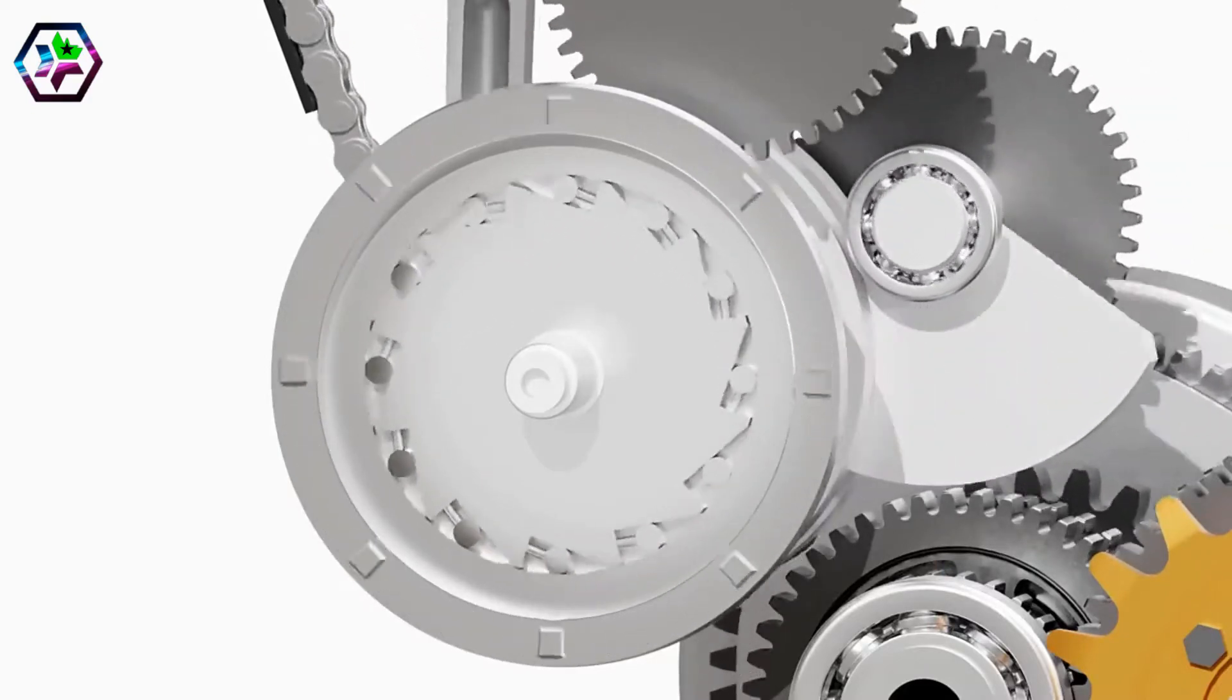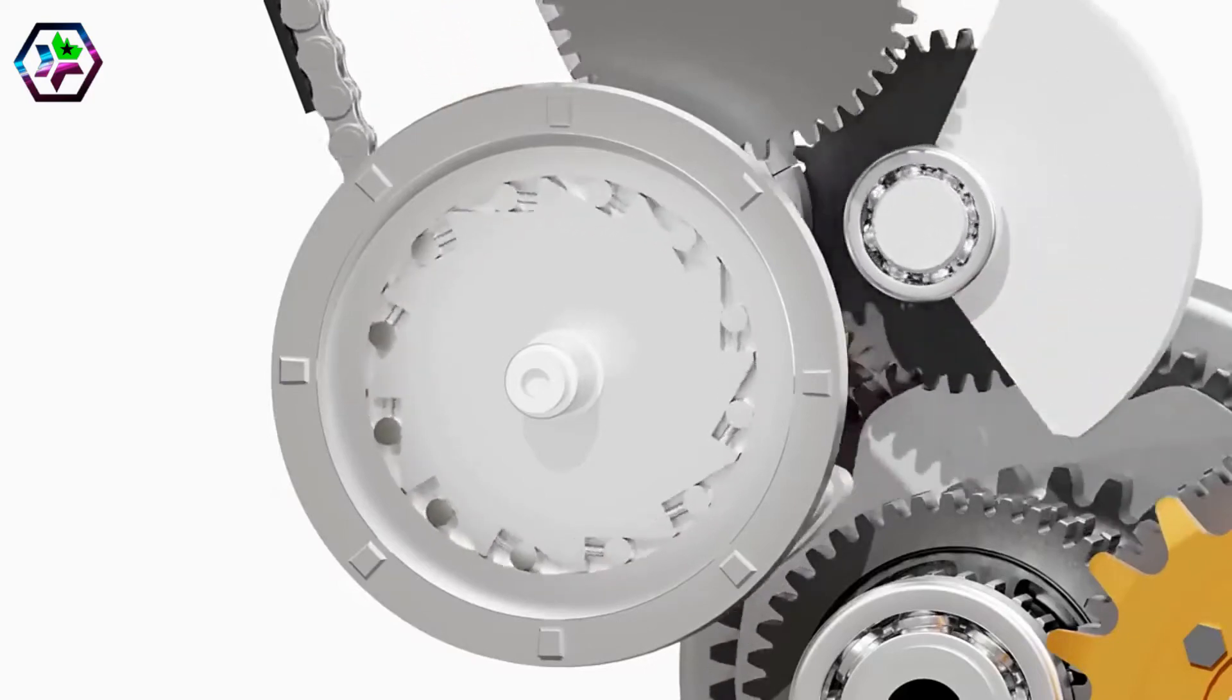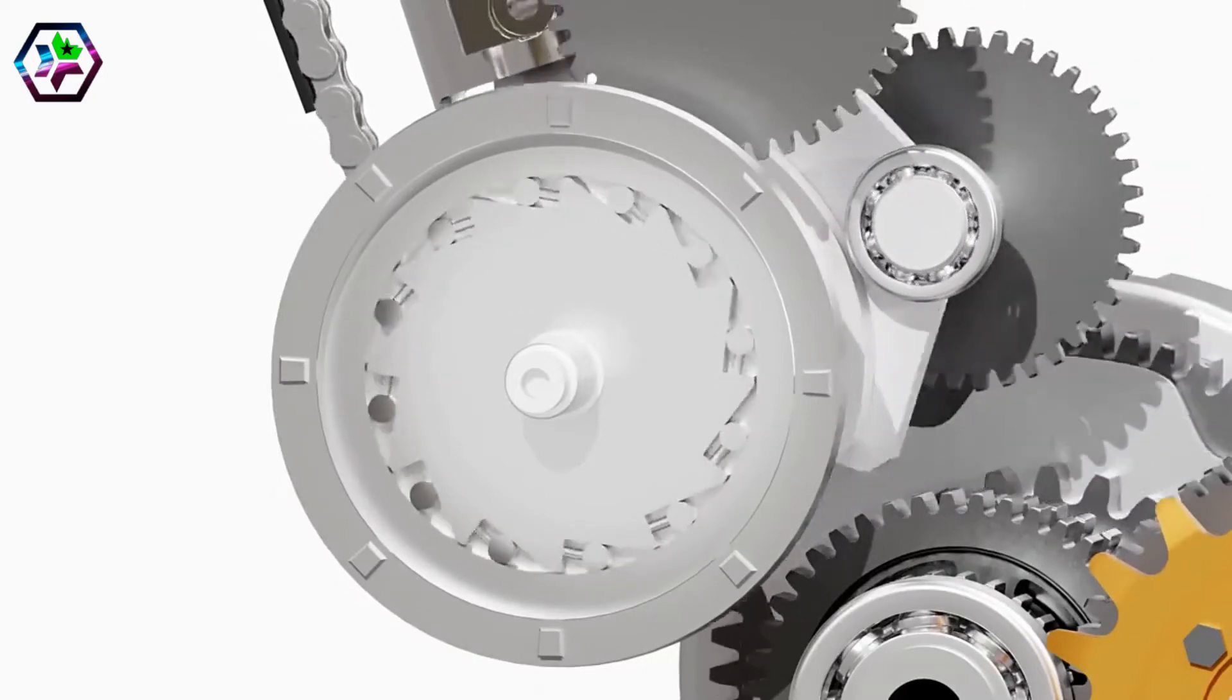Once the inner race starts spinning faster than the outer race, the rollers get released, causing the inner race to spin freely.